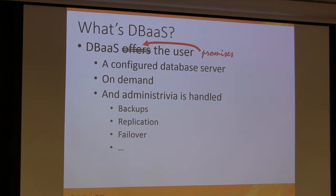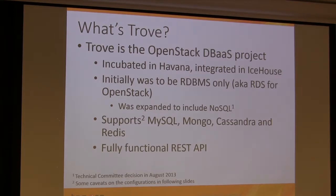So what is database as a service? It promises to give you a configured database server on demand, handling all the administrative work. That's basically what Trove is all about — it's not a net-new database, just an easier-to-use version of something you already have. Trove is the OpenStack database as a service project. It came out in Icehouse a couple of months ago. Initially it was only going to be RDBMS, but now it's also NoSQL, and you have a full API to everything.